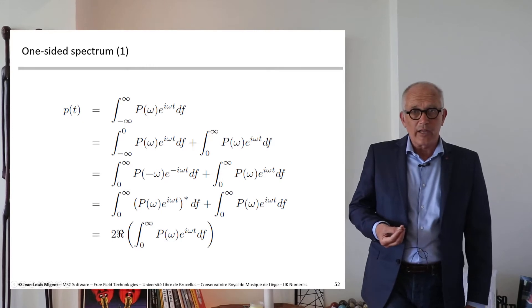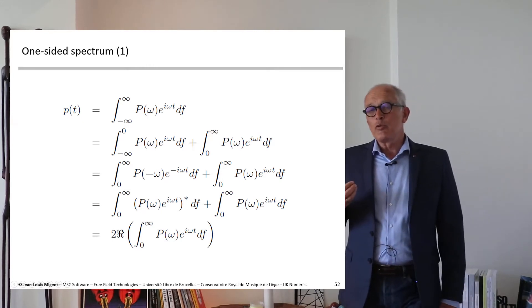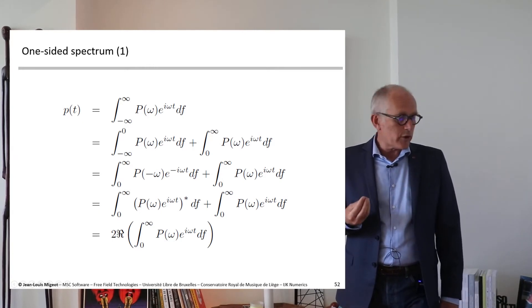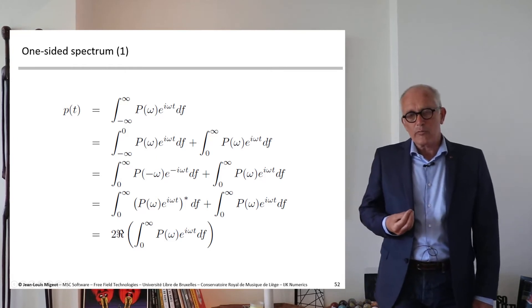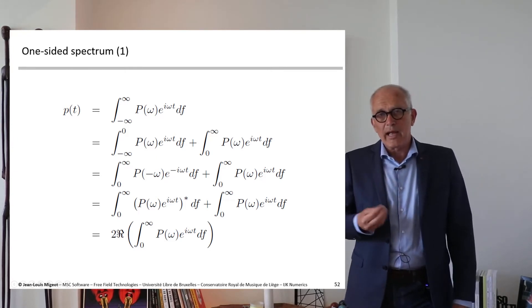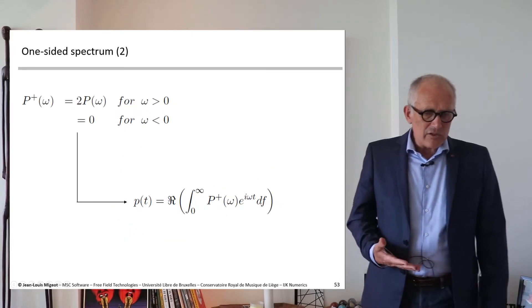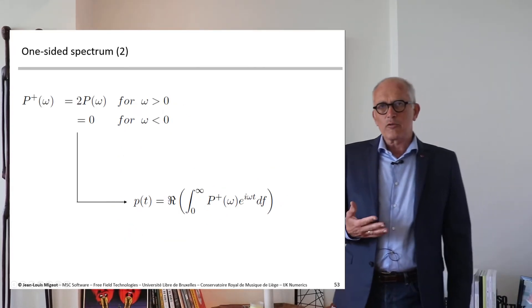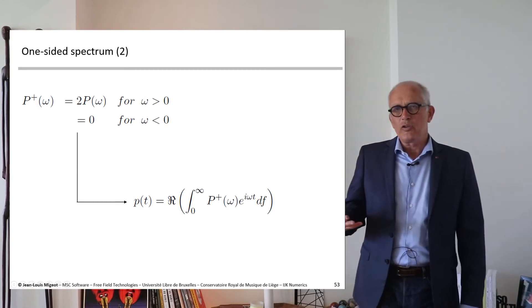And if you add one number to its complex conjugate, you get twice the real part of that number, and so you end up with a new expression for the inverse Fourier transform which only involves one integral between zero and infinity.